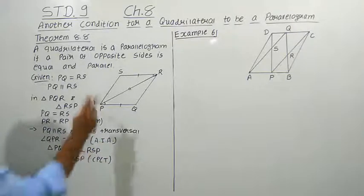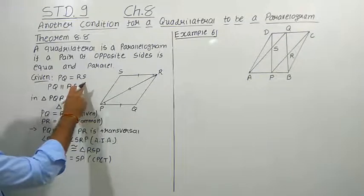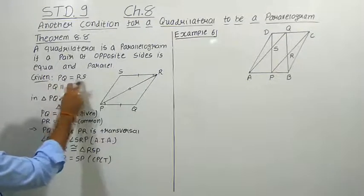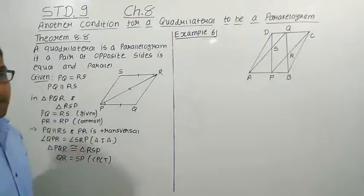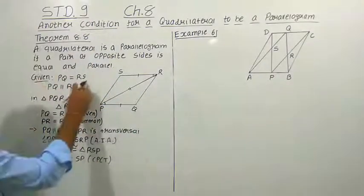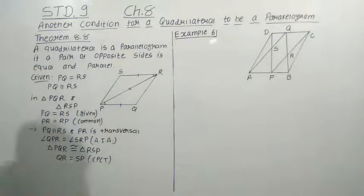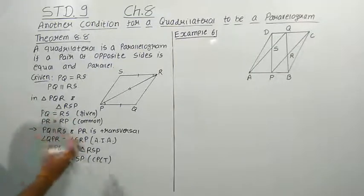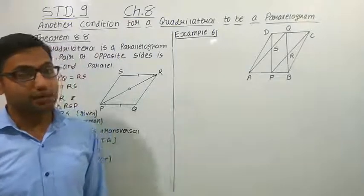You can see that one pair of opposite sides was given as equal. In this quadrilateral, one pair of opposite sides is equal, and here we proved that another pair of sides is also equal. That means both pairs of opposite sides are equal. There is a theorem which states that if in a quadrilateral both pairs of opposite sides are equal, then it is a parallelogram.